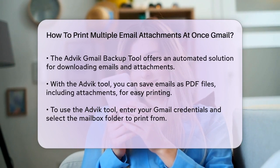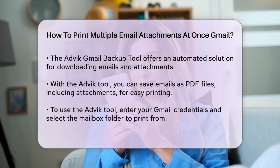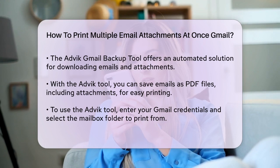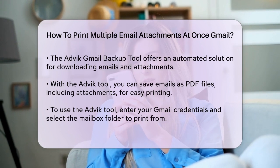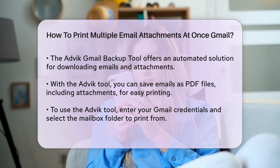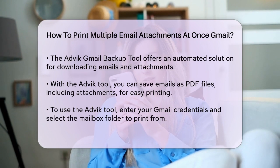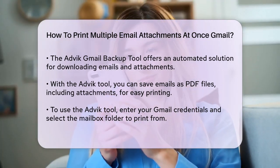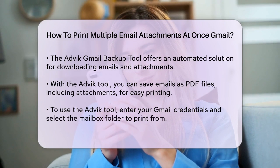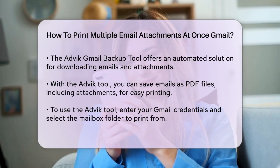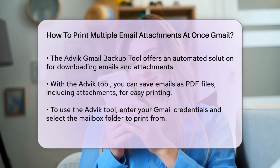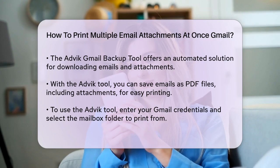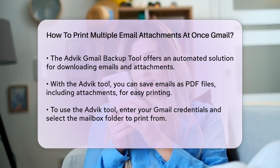The ADVIC Gmail Backup Tool allows you to download all your Gmail emails as PDF files, including attachments, and then print them. Here's what you need to do: launch the software, enter your Gmail credentials, select the mailbox folder you want to print from, choose PDF as the saving option, and then start the backup process. The software will save all your emails and attachments as a single PDF file, which you can then print easily.